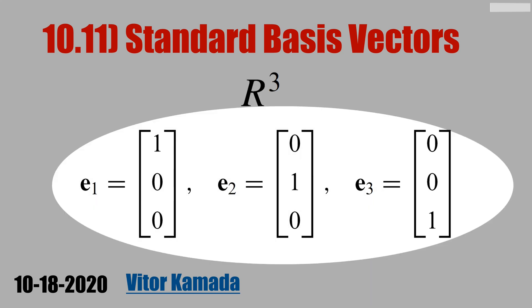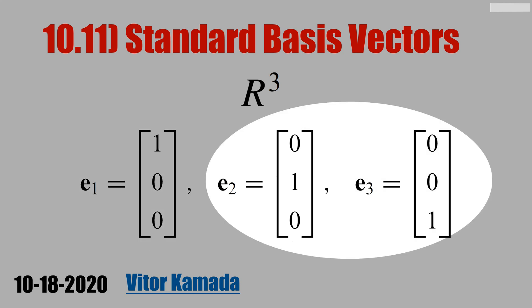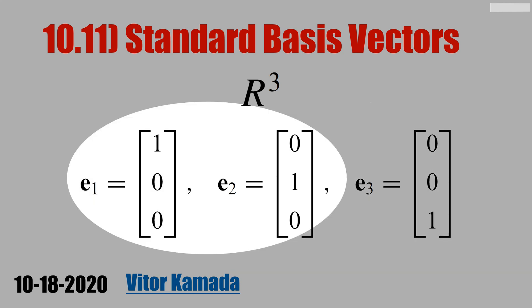They are basis vectors because they are orthogonal to each other. If you calculate the inner product of these two vectors, you are going to get zero. The same applies for this pair of vectors — the dot product is zero. When the inner product of two vectors is equal to zero, we know that they form a 90-degree angle to each other.